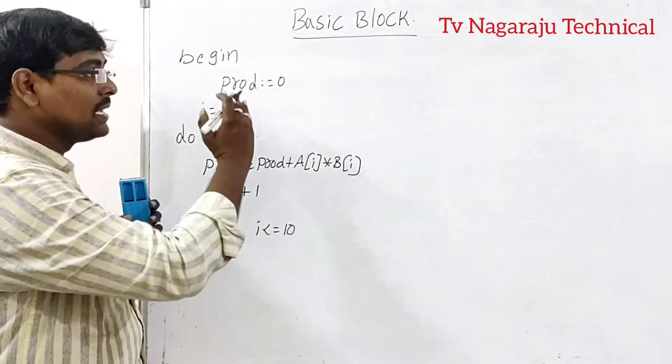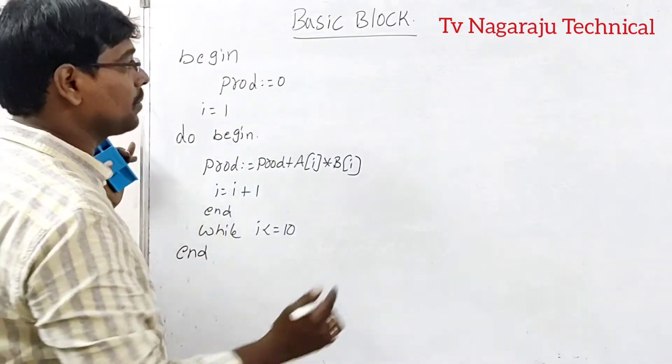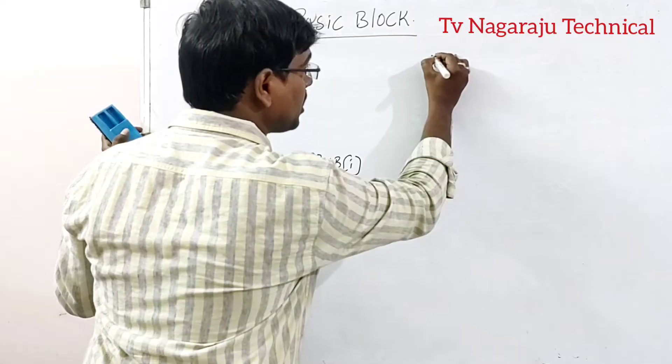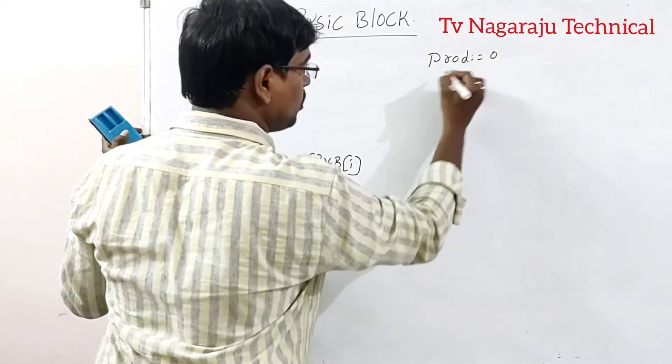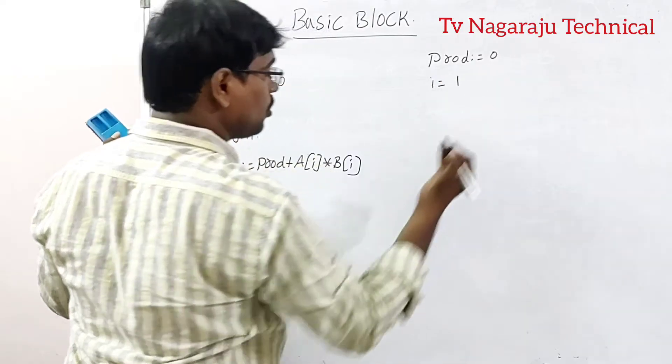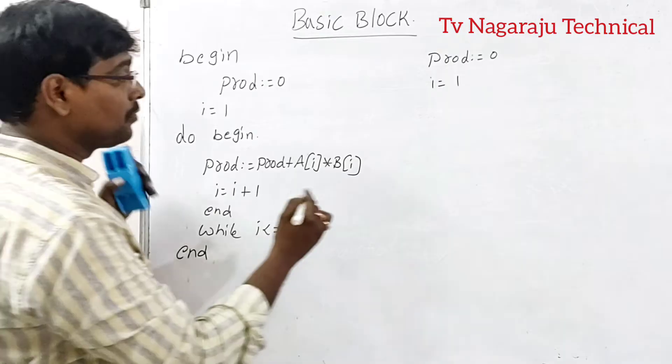Now if this is the source code, first step is convert the source code into three address format. In this three address format: product is equal to 0, i is equal to 1.